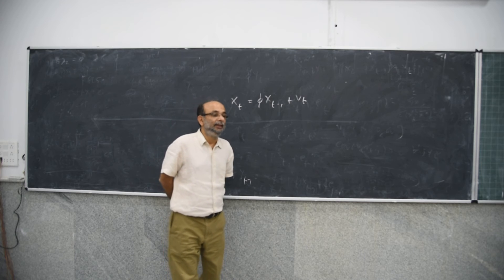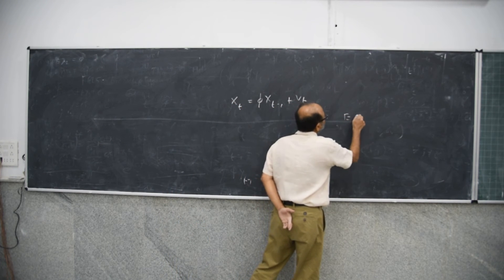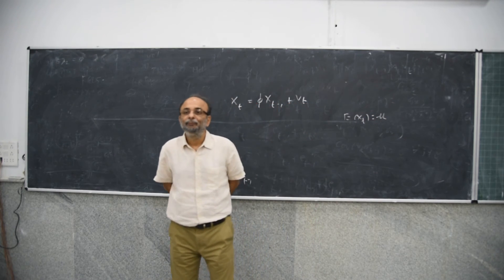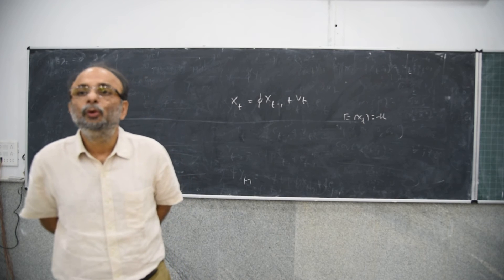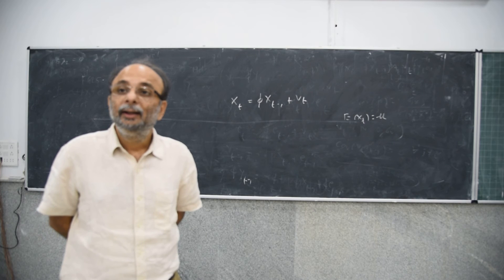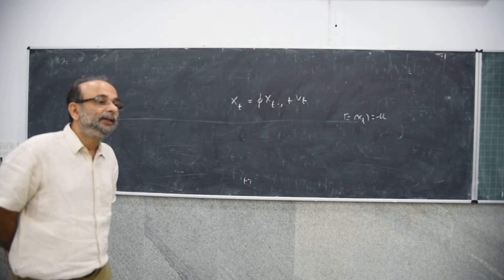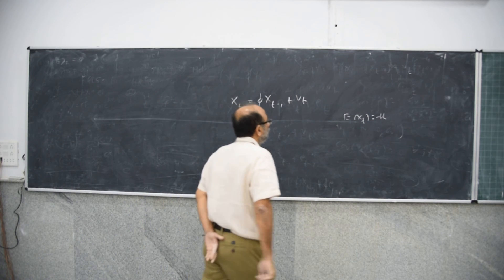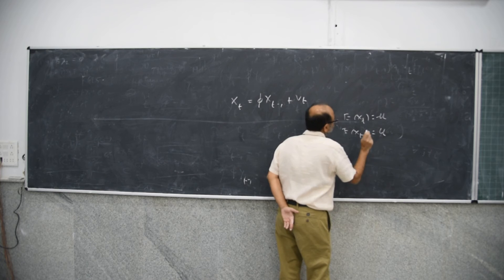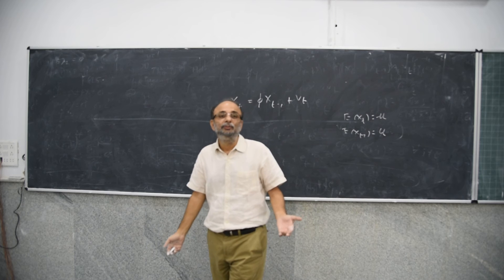Assume that Xt is a random variable which has a constant mean, some constant mean mu. Mu could be any value — it could be a negative number, it could be a positive number, it could be zero. In this context, expectation of Xt is also mu. Expectation of Xt is mu, expectation of Xt minus 1 is mu.